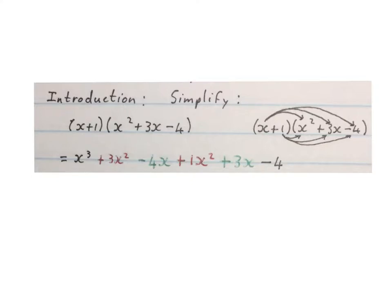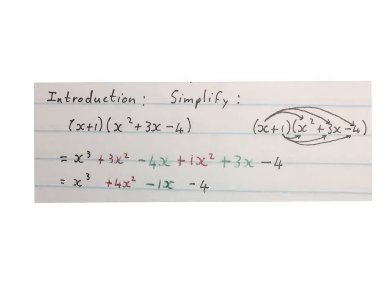A grade 9 can do this, but what you might not have looked for is what I want to show you. There is 1 x cubed term, there are 2 x squared answers, 2 x answers, and 1 constant term. That is the key to this video. The final answer will have this x cubed, the minus 4, the 2 x squared terms will add up to plus 4x squared, and the 2 x terms will add up to minus x. Please stop the video and make sure you have this under control.